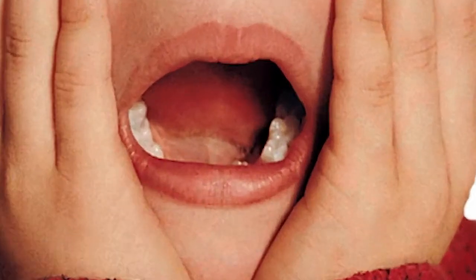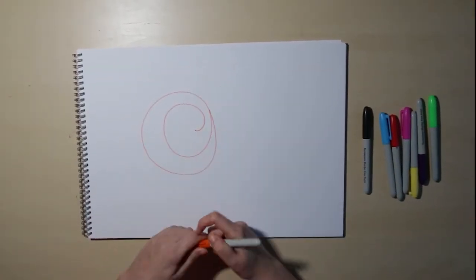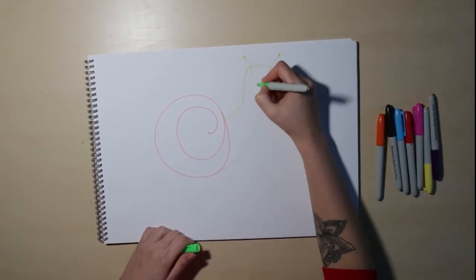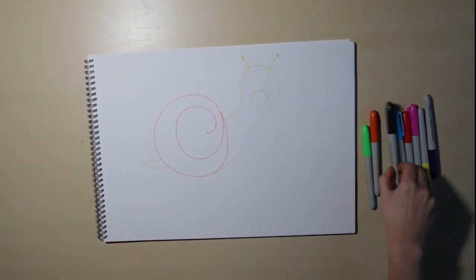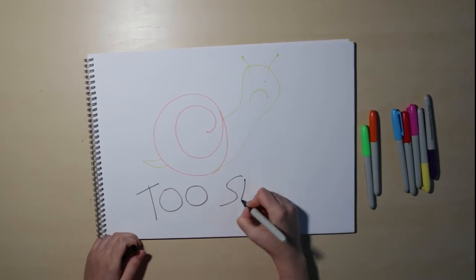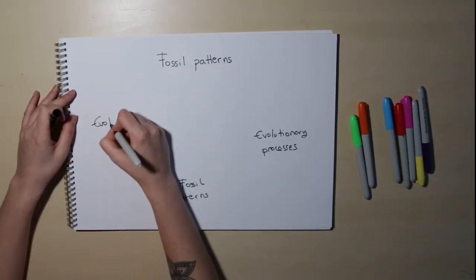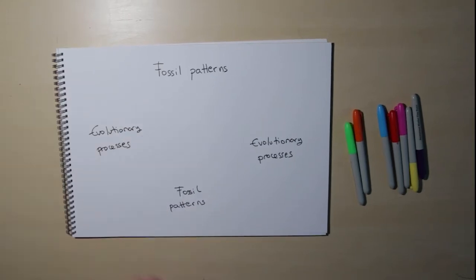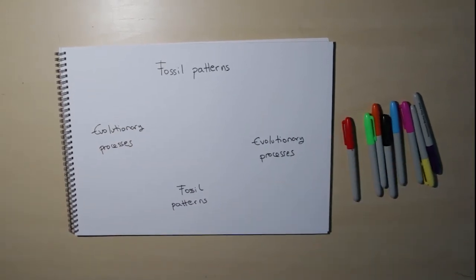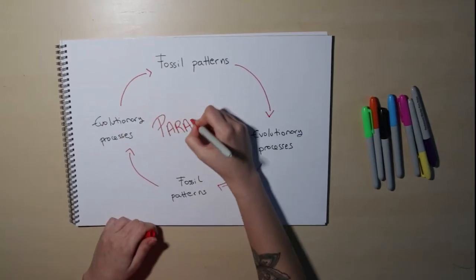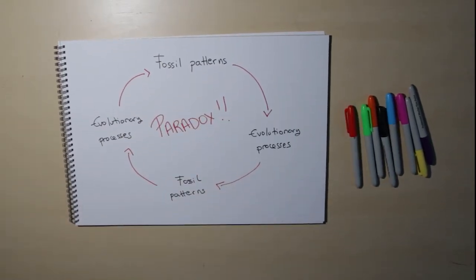At the same time, how can we understand evolutionary processes from fossil patterns? We can infer information about them by referring to modern organisms, but some processes are too slow to be observed. So what evolutionary processes operated during the explosion of the Cambrian organisms? This creates a circular paradox, because for understanding fossil patterns we must look at evolutionary processes, but to understand evolutionary processes we must look at the evidence from fossil patterns.